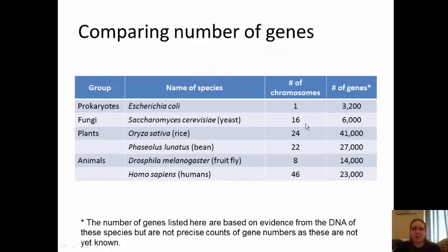When you compare the number of genes, each organism has a different number of chromosomes and a different number of genes within those chromosomes. Prokaryotes are our most simple organisms. For example, E. coli — remember that prokaryotes only have one single circular naked chromosome, but E. coli has 3,200 genes within that chromosome.